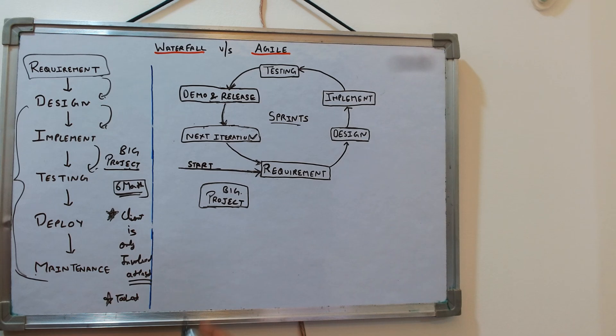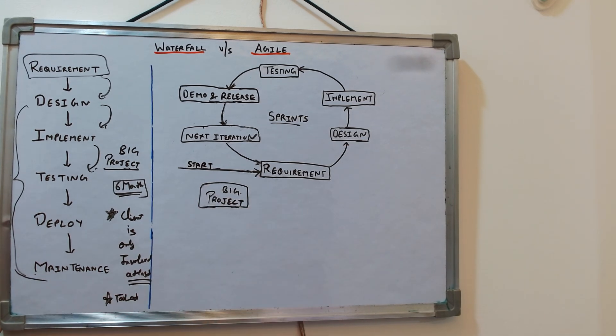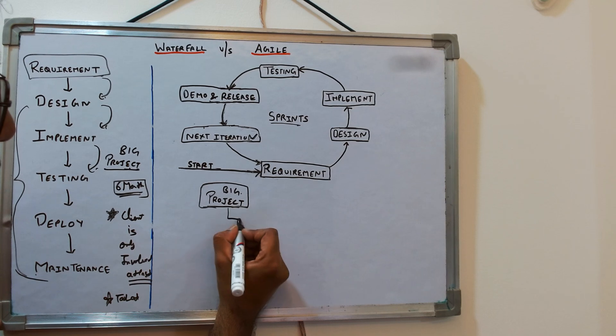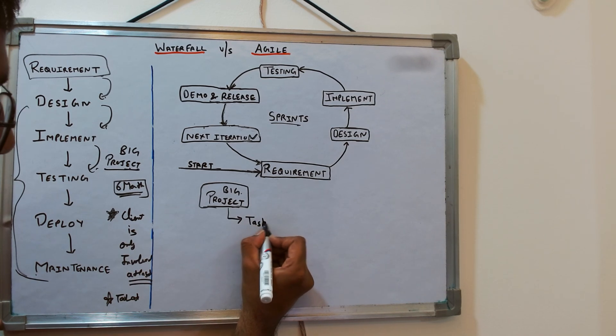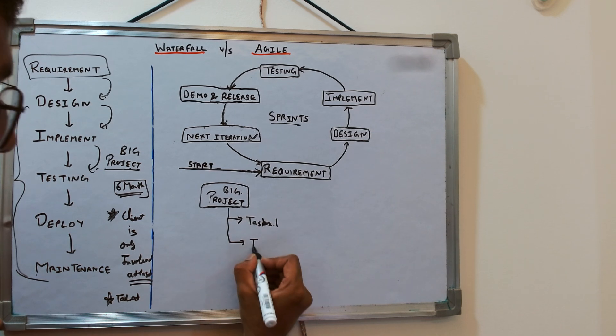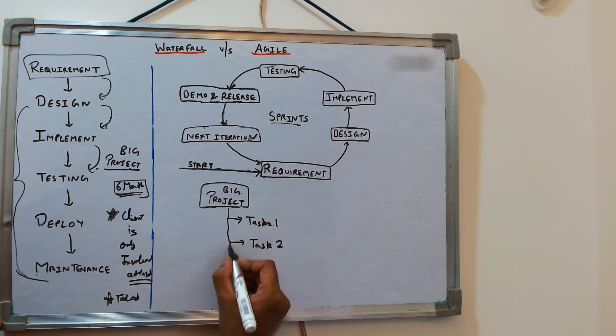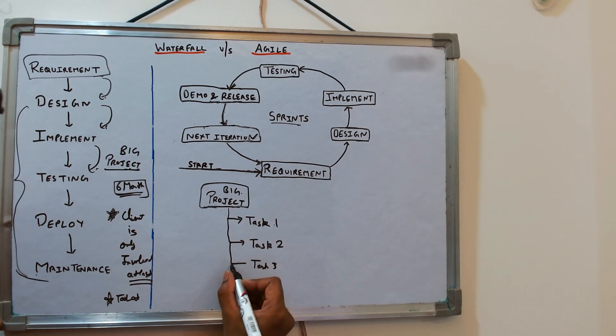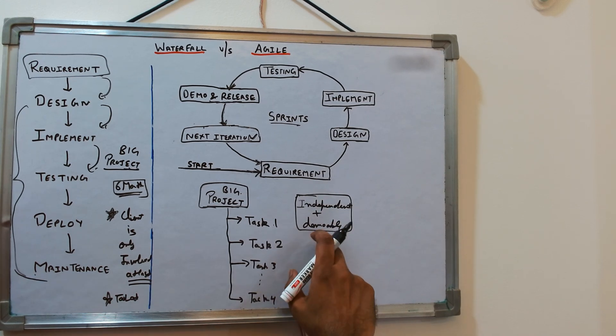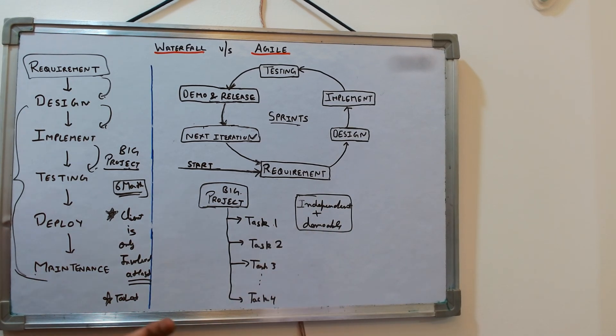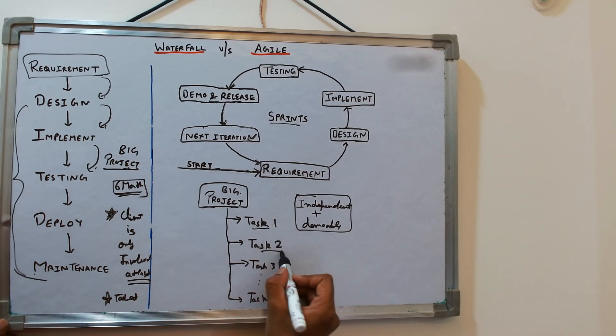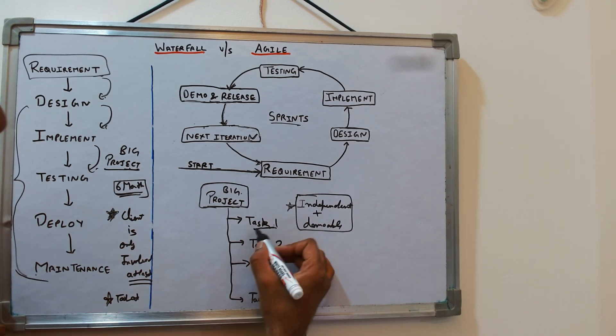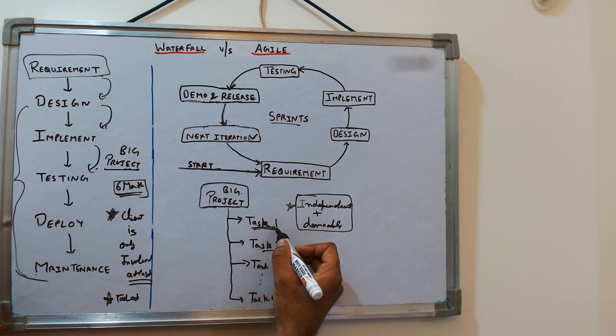Whenever a big project comes, we try to divide it into different tasks: task one, task two, task three, and so on. Two things are very important: independent and demoable. Task one and task two should not have any dependency, and each task should be demoable.